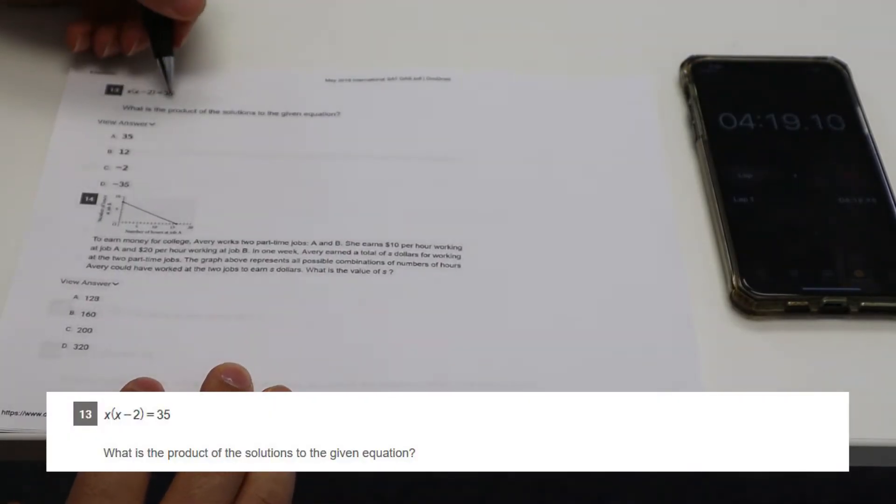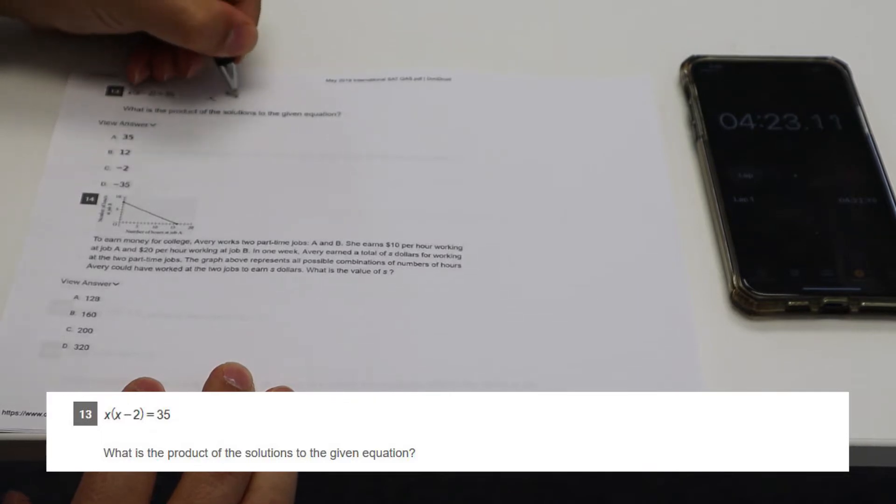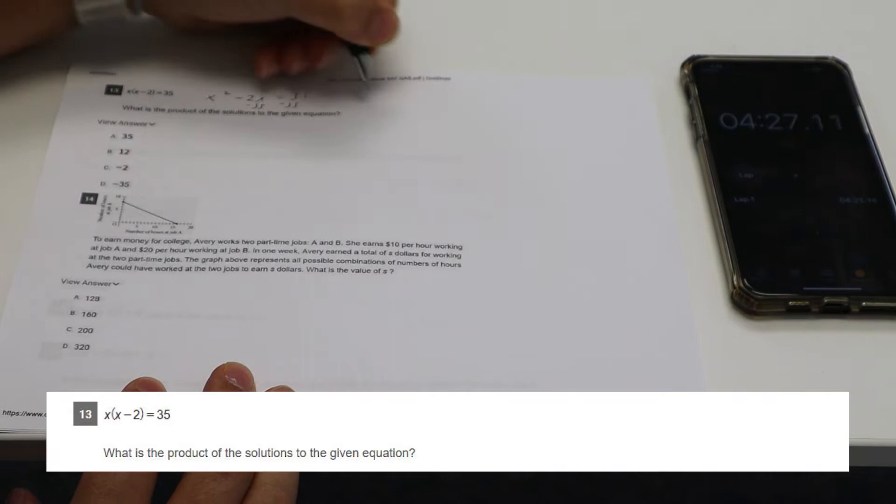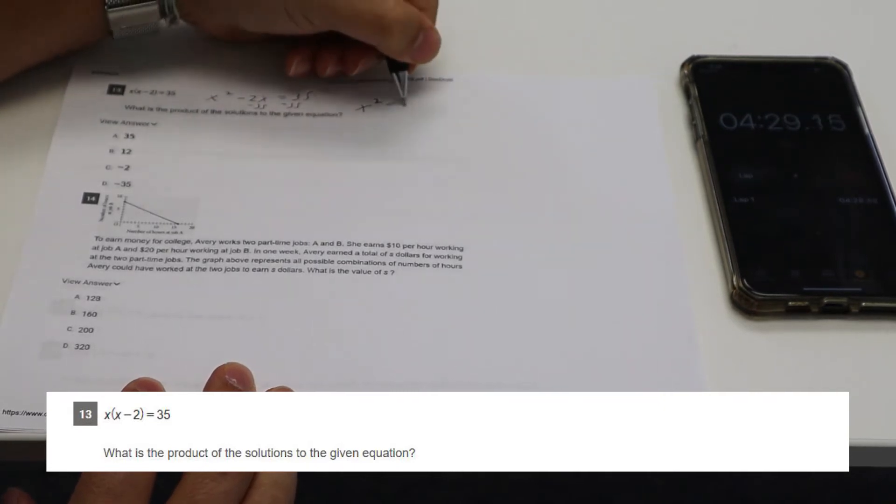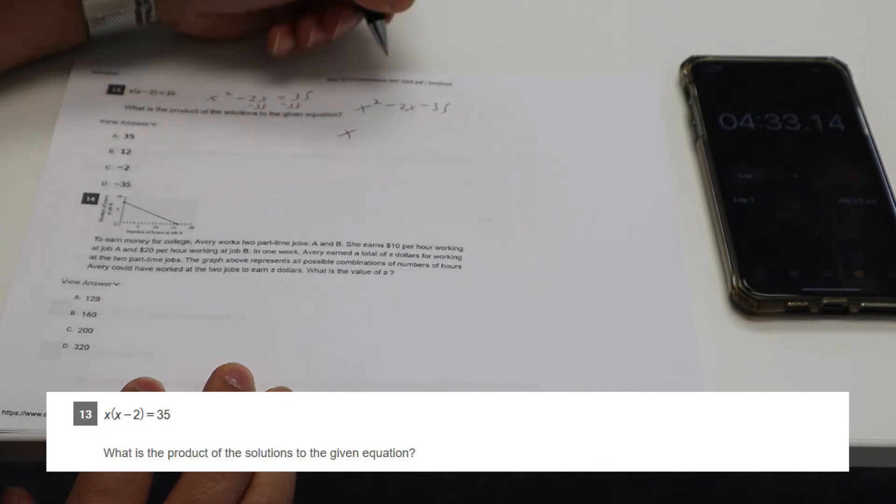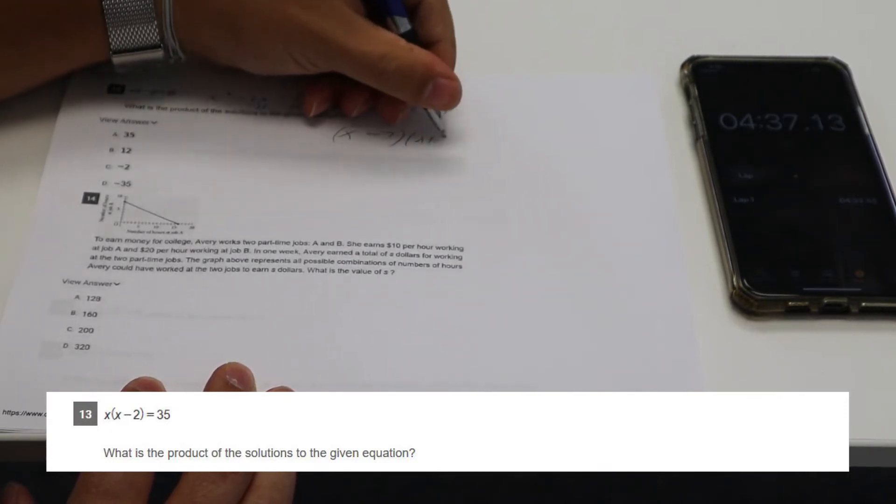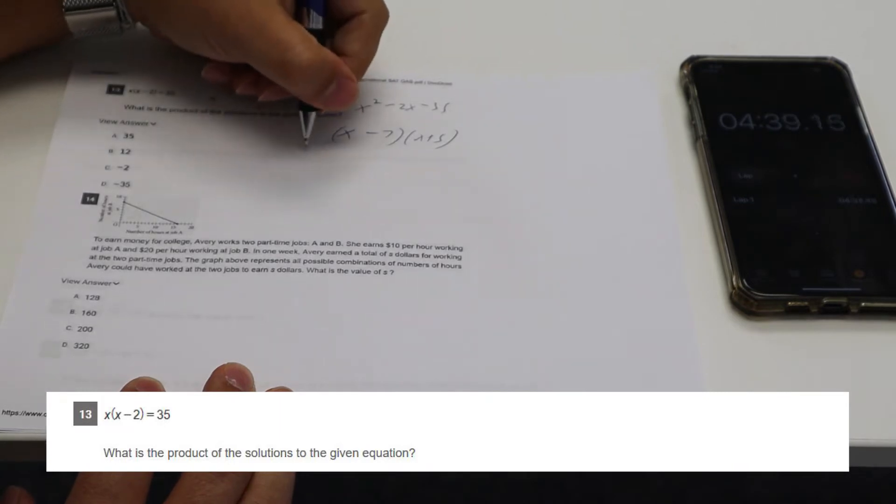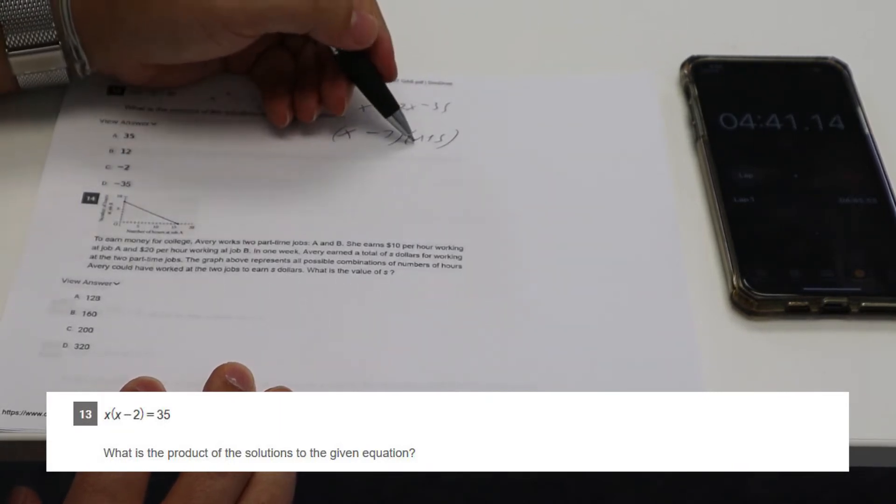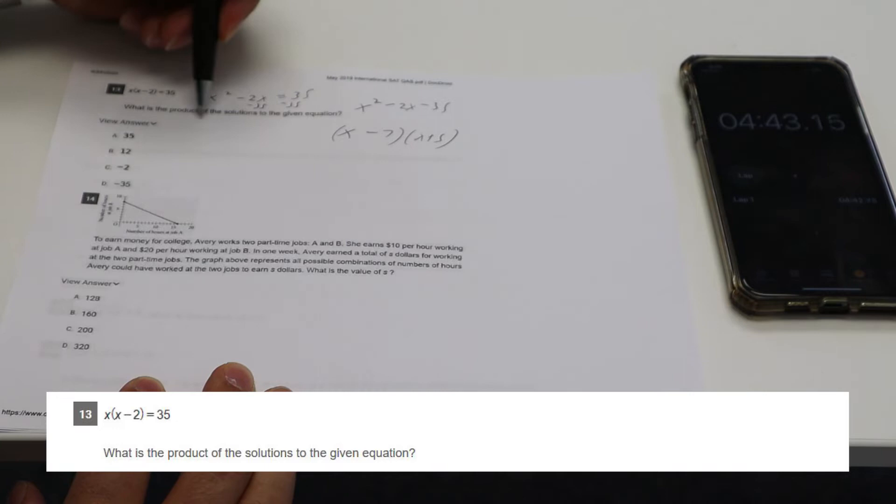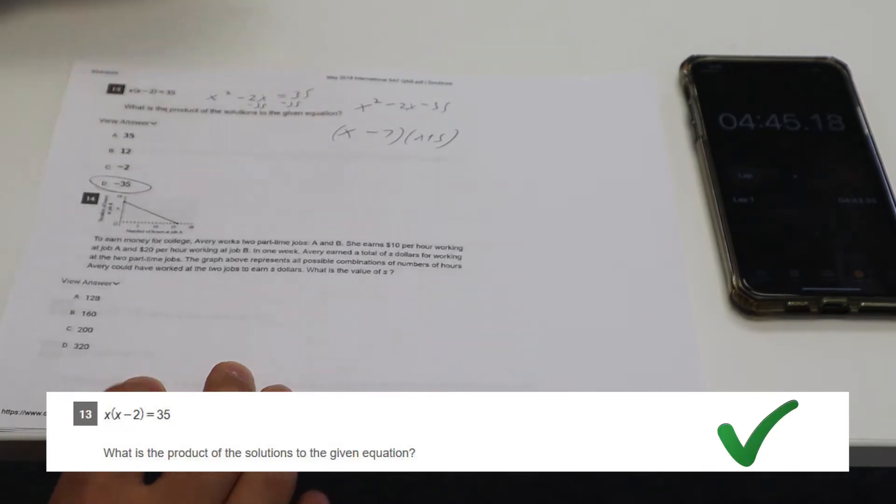So eight. I don't like that question. That one, if I was doing the real test, I would take more time and plug back in and check it. X squared minus two X equals 35 minus 35. So we have X squared minus two X minus 35. So X minus seven, X plus five. X equals seven or negative five product. So seven times negative five, negative 35. Be careful there.